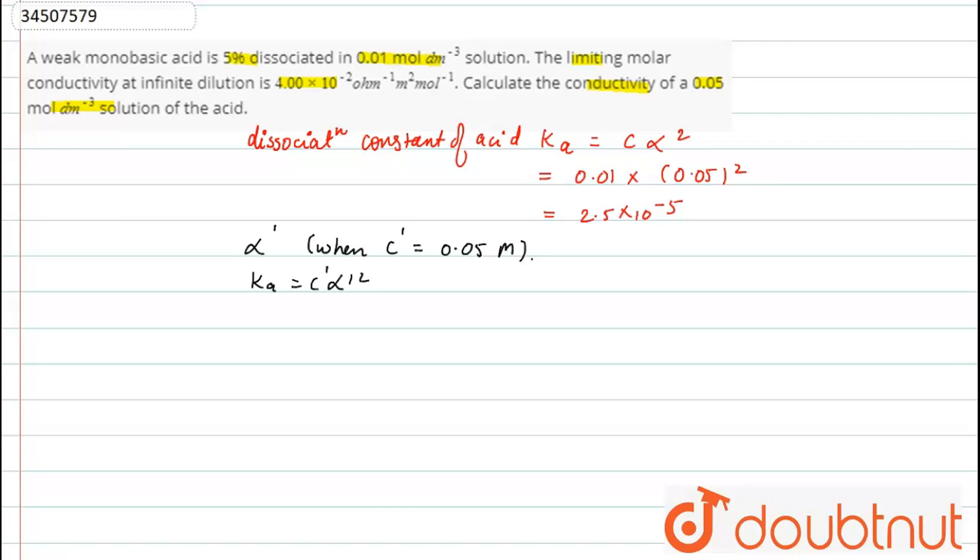C dash, let it mark as. So, this will be 2.5 into 10 to the power minus 5 equals to 0.05 multiplied by alpha dash square. So, alpha dash will be equal to 0.0233.